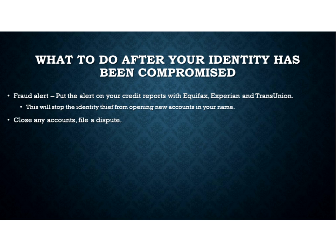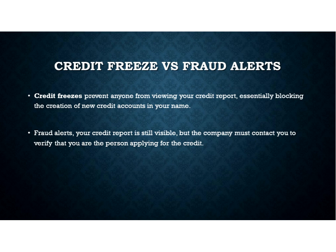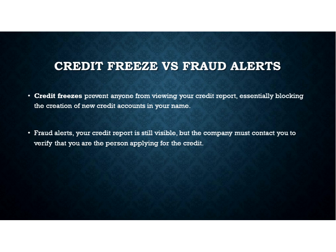If you think your identity has been compromised, put a fraud alert on your credit by calling Equifax, Experian, or TransUnion. That will stop the thief from being able to open any new accounts in your name. You can also close any accounts and file a dispute. There's also a credit freeze, which prevents anyone from even being able to view your credit — if they can't view it, they can't open new accounts. A fraud alert keeps the credit report visible but requires the company to call and verify your identity before issuing new credit. Either one will help prevent someone from taking out more credit. Make sure you've reviewed Module 10, do your review and critical thinking questions, watch your lab videos, do the lab questions, discussion questions, and quiz. Let me know if you have any problems or questions.